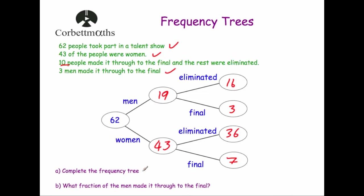Part B: what fraction of the men made it through to the final? There are 19 men altogether, so 19 goes on the denominator. 3 of the 19 made it through to the final, so the answer is 3 over 19. If the question asked what fraction of the women made it through, it would be 7 out of 43, or if it asked what fraction of men were eliminated, it would be 16 out of 19.